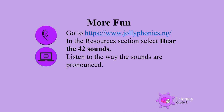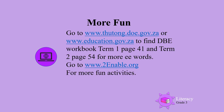For more fun, go to the Jolly Phonics website and in the resources section, select hear the 42 sounds. Listen to the way the sounds are pronounced. You can also go to the DBE website and find the DBE workbook Term 1, page 41 and Term 2, page 54 for more E words — words that have the two letters E and E that make the sound E. Go to www.toenable.org for more fun activities.